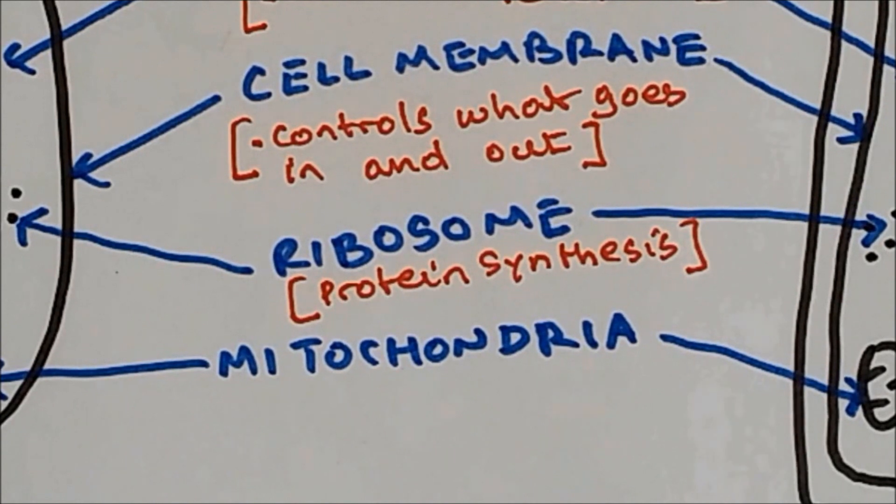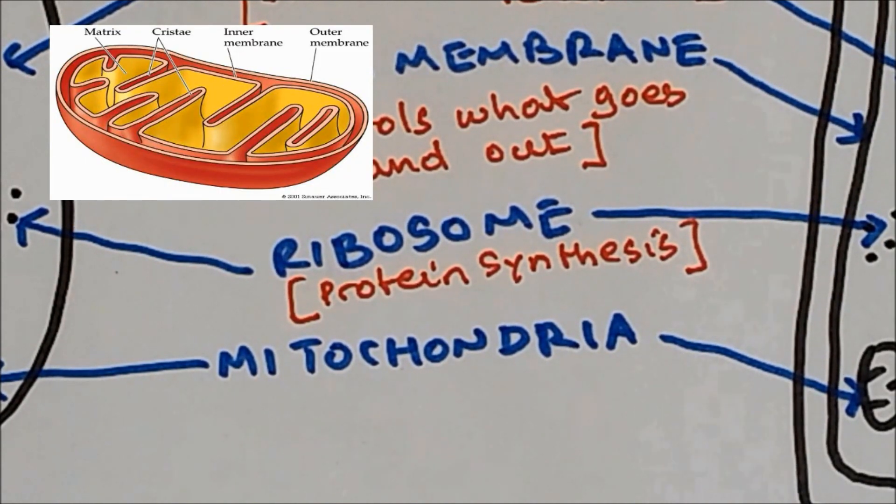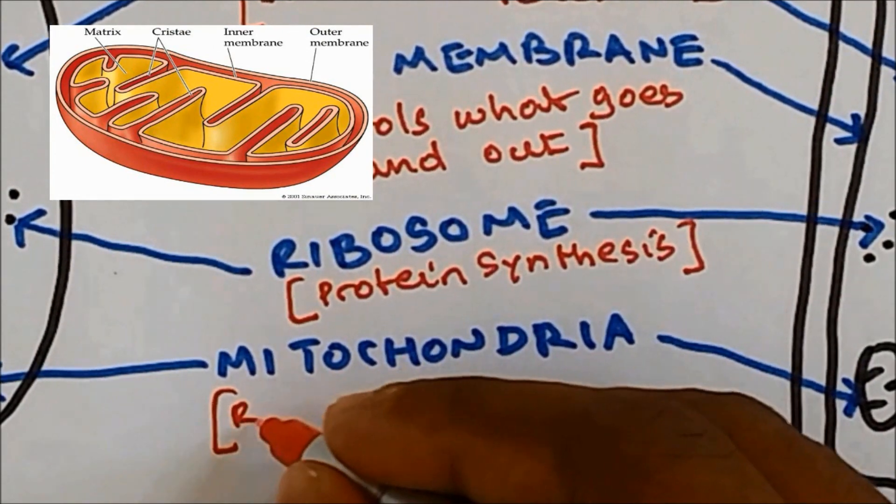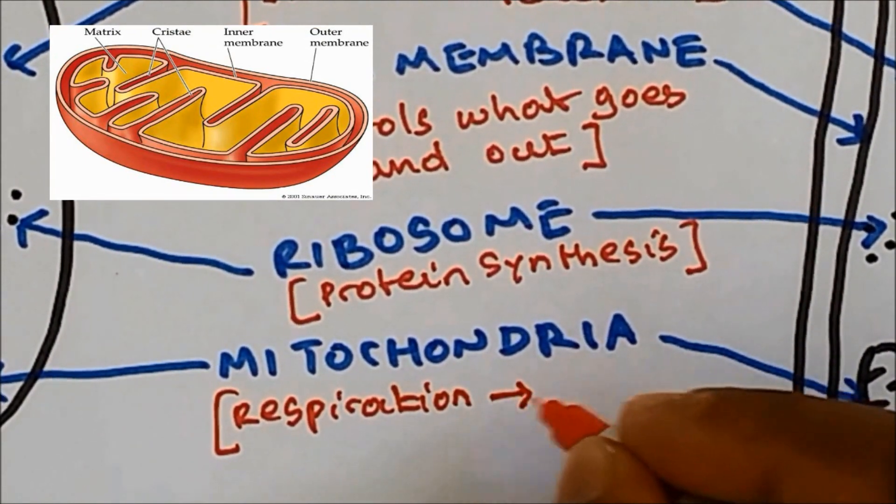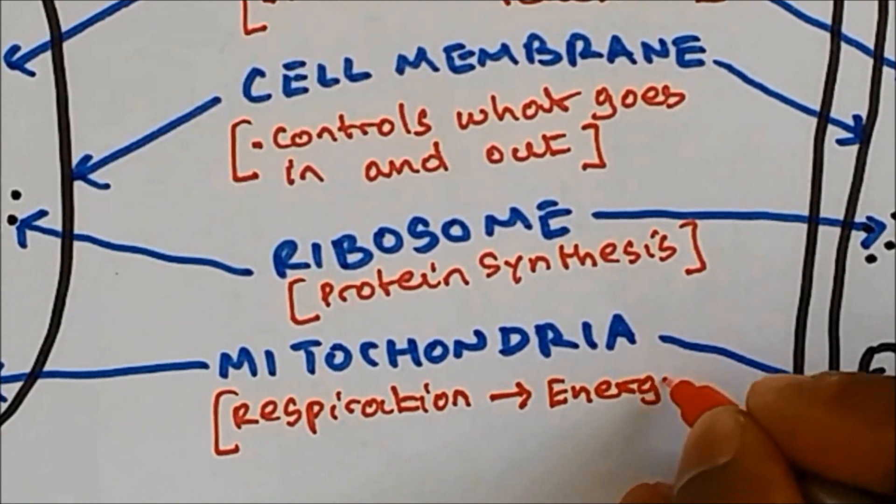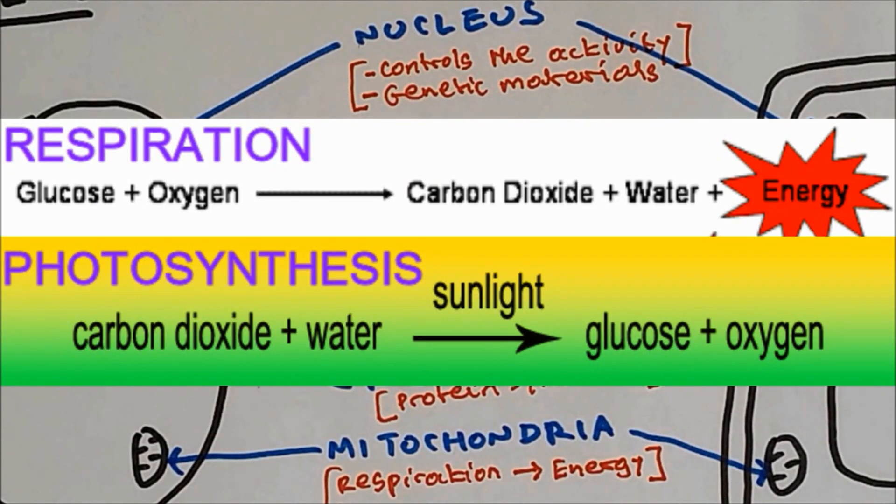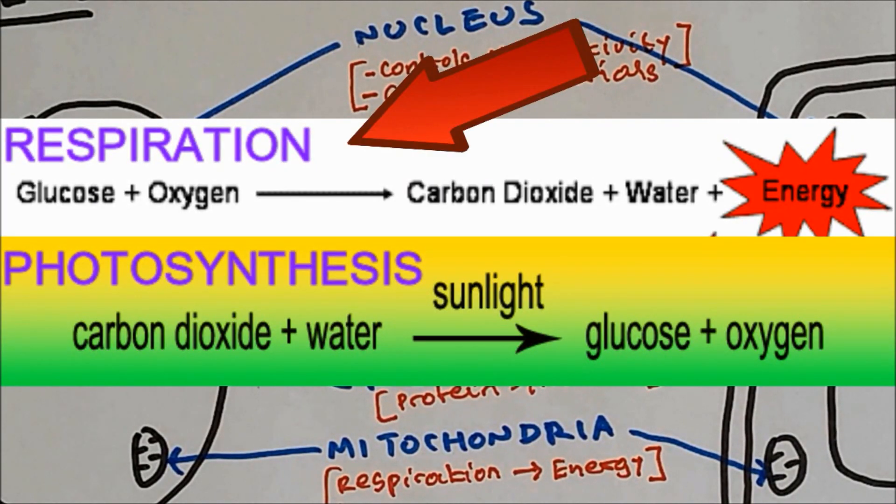And mitochondria performs the process of respiration. So therefore, it provides energy. I'm going to write respiration and it provides energy. The equation for respiration is glucose plus oxygen arrow carbon dioxide plus water plus energy. And if you look at the opposite of respiration, then you will get the equation for photosynthesis.